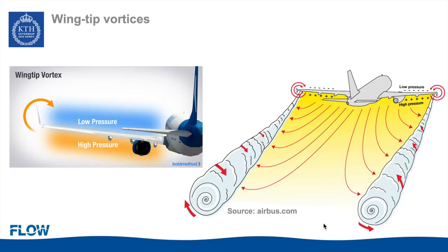Wingtip vortices are very distinct vortical structures that are formed at the tip of finite span lift-generating surfaces such as wings. They are formed mainly as a result of the pressure difference between the two sides of the wing — the suction side and the pressure side — and between each side and the free stream.